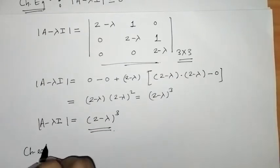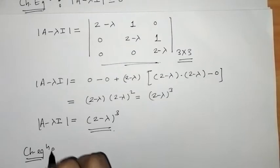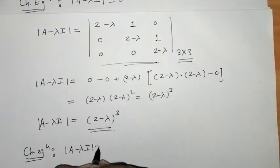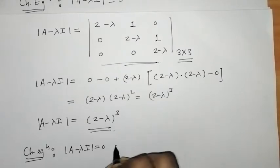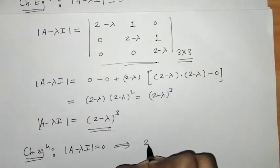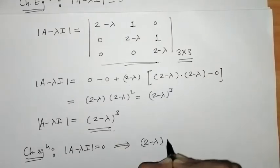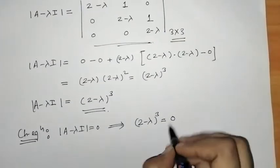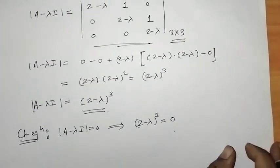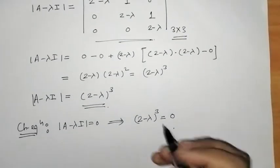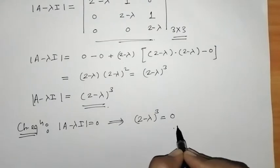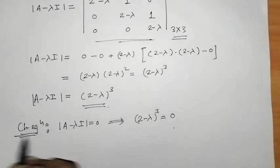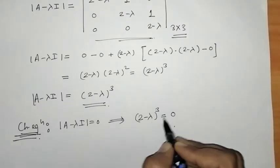Now the characteristic equation is given by det(A minus lambda I) equals zero, which means we set (2 minus lambda) cubed equals zero. This is the characteristic equation, and we now have to solve it to find the roots.